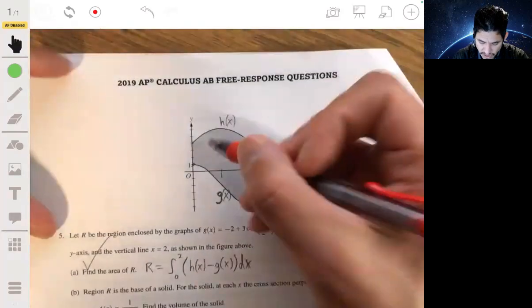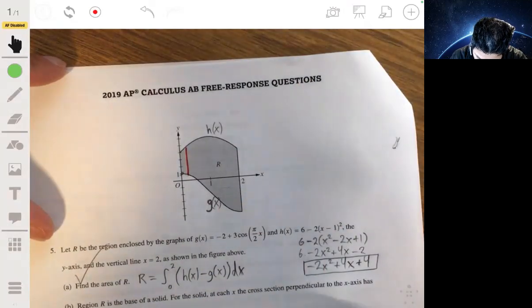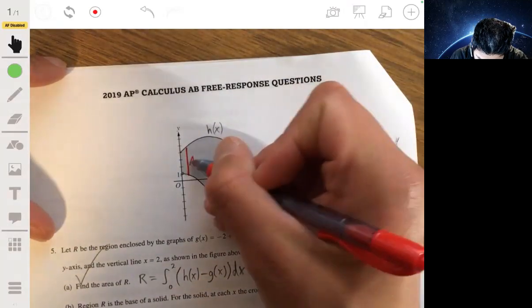So, cross-section, if it's perpendicular to the x-axis, it's this length, this would be a cross-section, this would be a cross-section A(x).